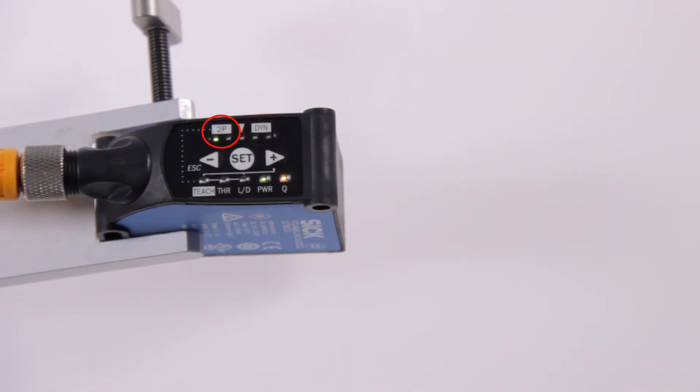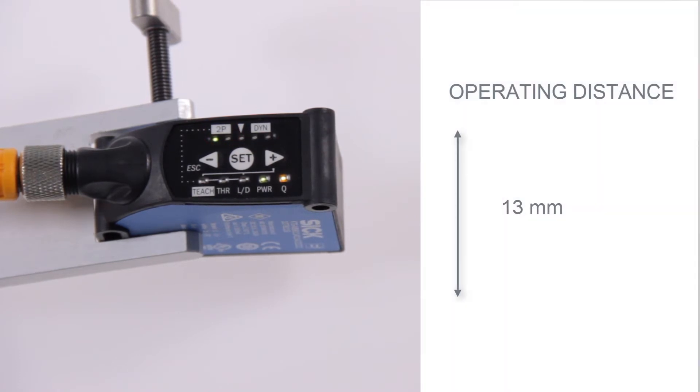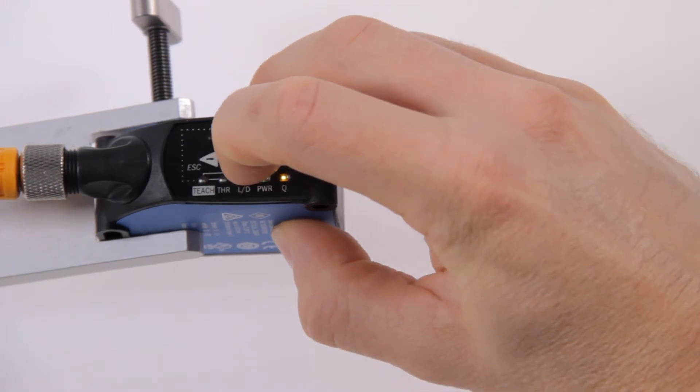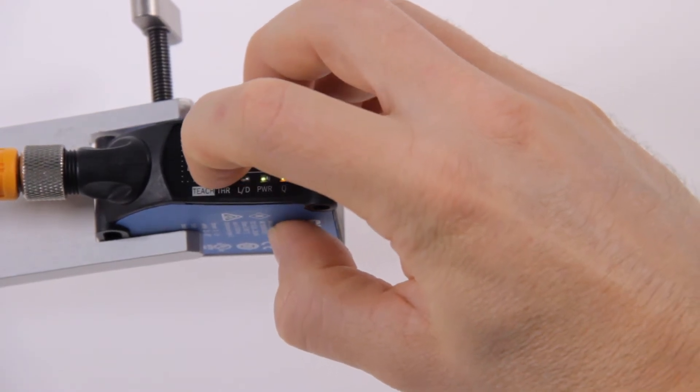First the two-point teach is shown. Mount the sensor at the operating distance of the sensor which is in this case 13 millimeter. Press the SET button and navigate with the plus and minus buttons to teach.